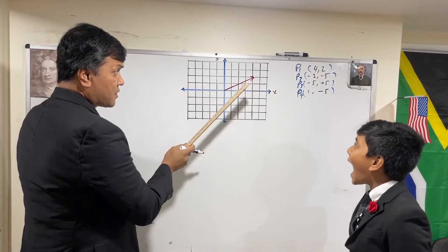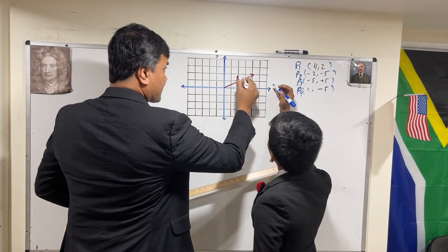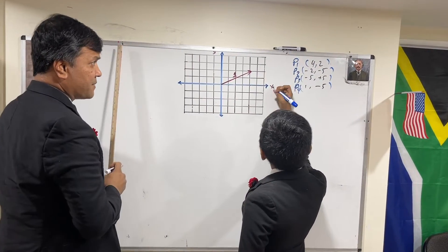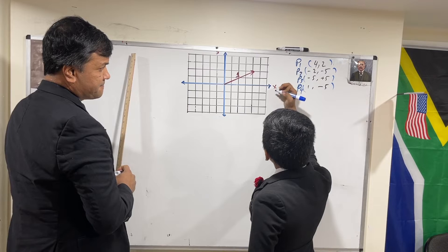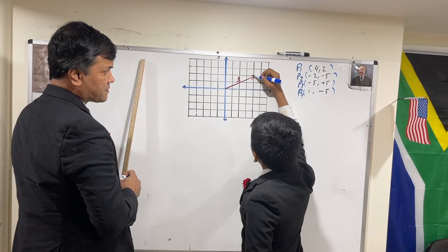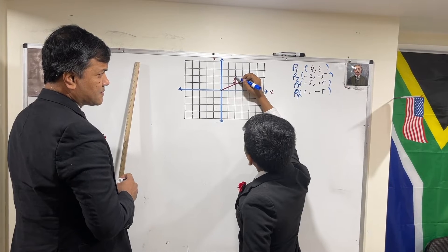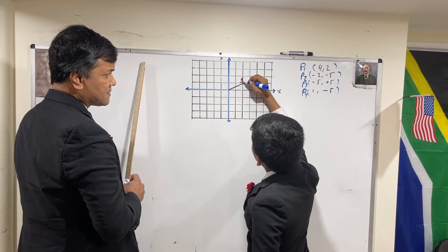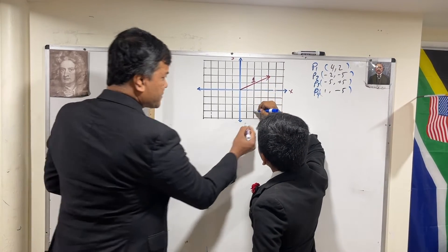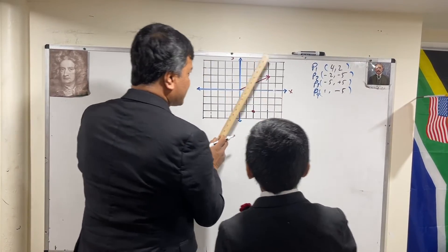Now, go to the head of vector 1 and count negative 2, negative 5. Negative 2 in X would be 1, 2, and then negative 5 in Y would be 1, 2, 3, 4, 5. That is correct. So this is our new head.